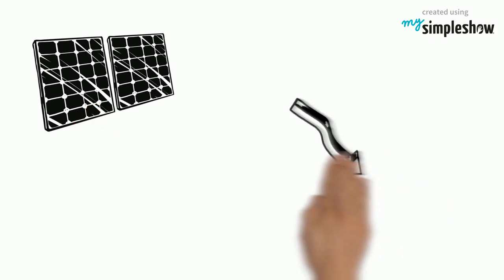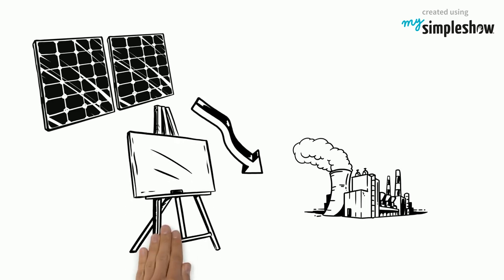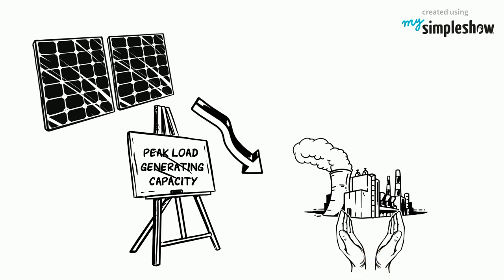Solar panels contribute to reducing climate change by reducing air pollution caused by utility companies. Using solar power creates big load generating capacity, which saves utilities from using polluting supplemental systems during times when demands for energy are high.